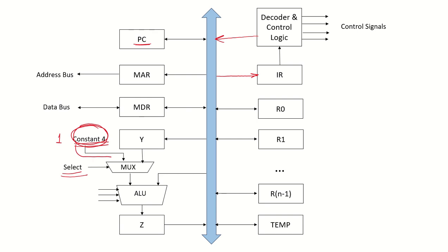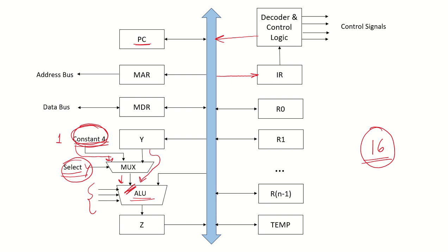The select signal on the multiplexer allows either the constant 4 or the contents of Y to pass through to the ALU. Depending on whether the select is select_4 or select_Y, the appropriate contents are sent to that port of the ALU. The ALU can perform operations such as add, OR, NOT, subtract, and multiply. If the ALU supports 16 operations, these can be controlled by either 16 individual control lines or by encoding them into 4 control lines, where each combination specifies one operation.